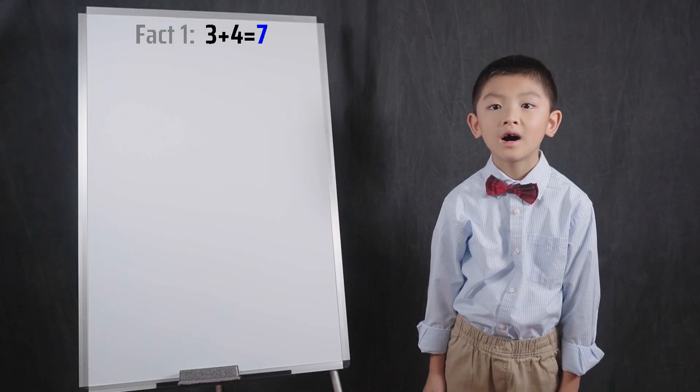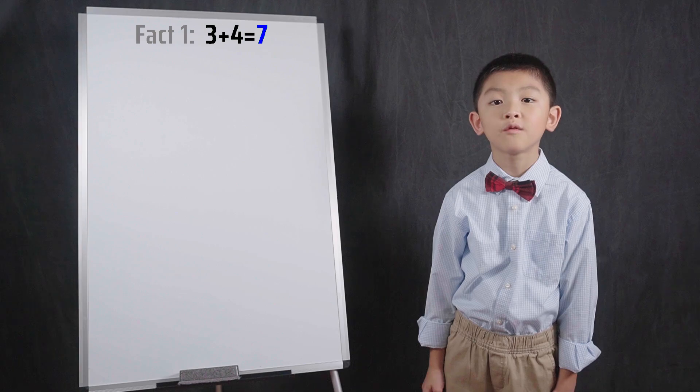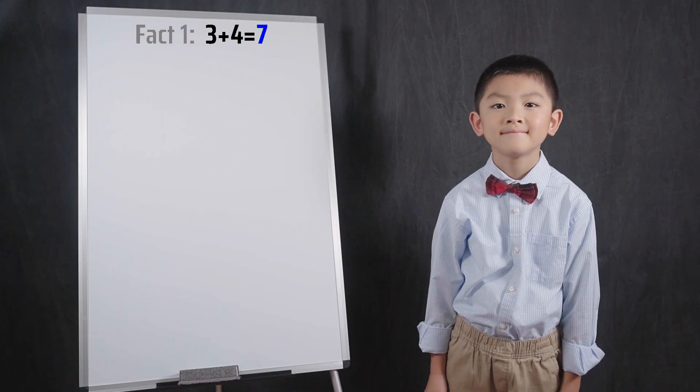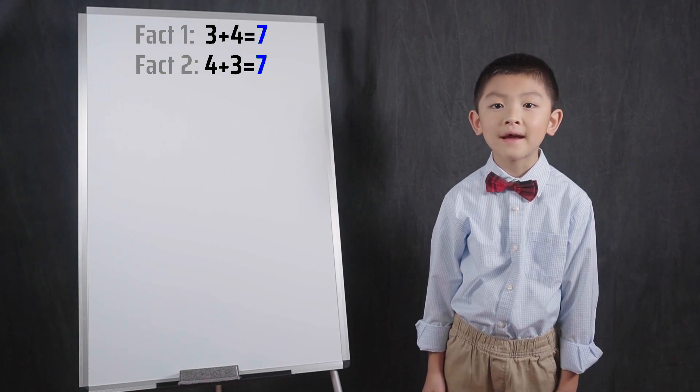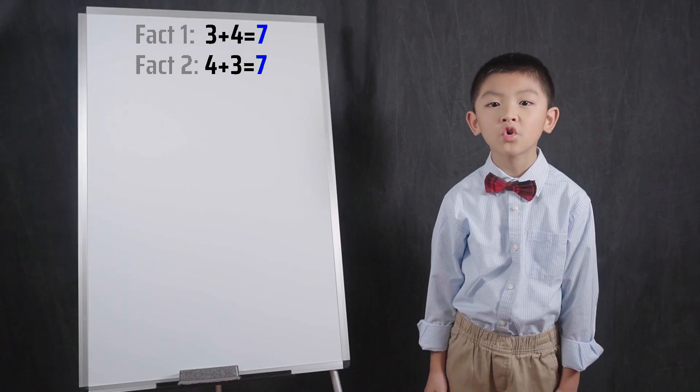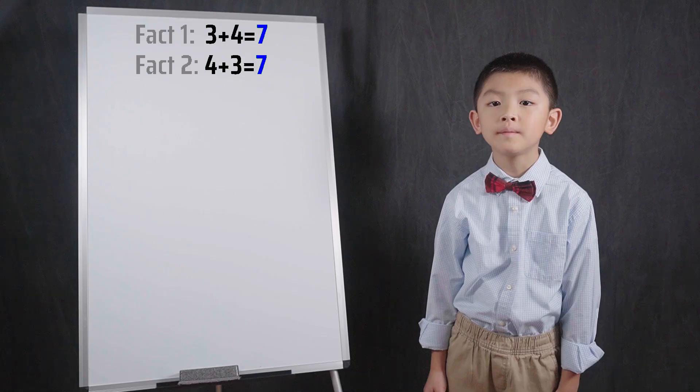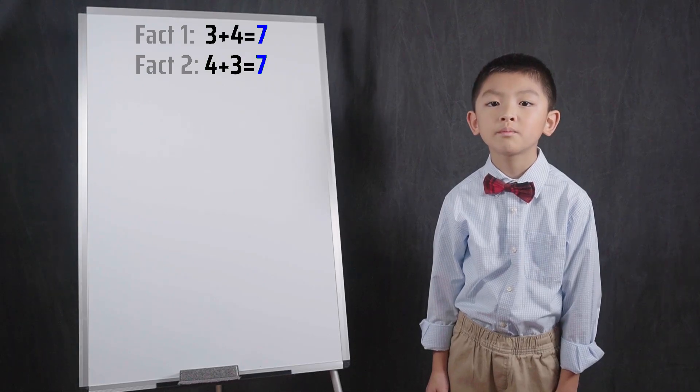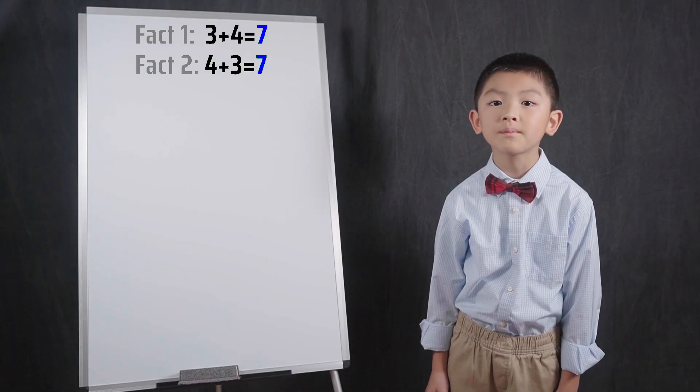In this example, our first fact is 3 plus 4 equals 7. Our second fact just flips the order of the addends. You can change the order of addition because of the commutative property, which applies to both addition and multiplication.